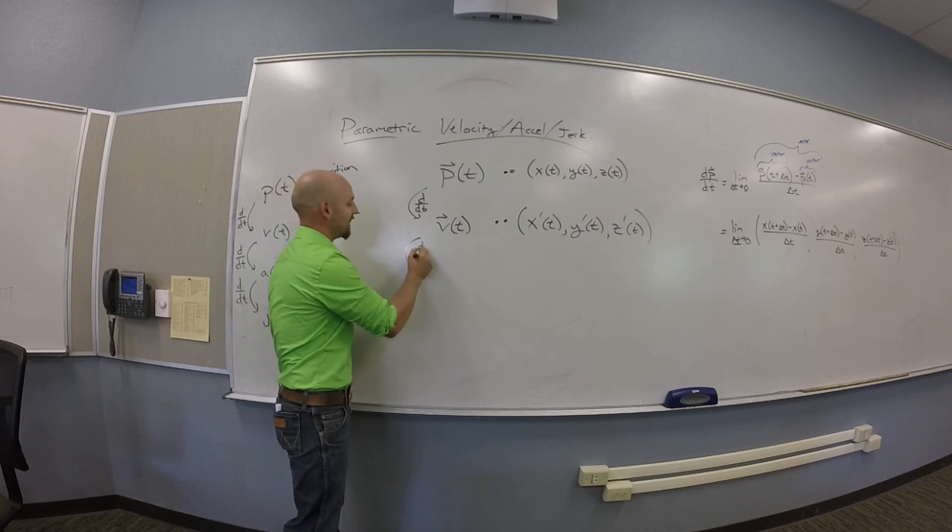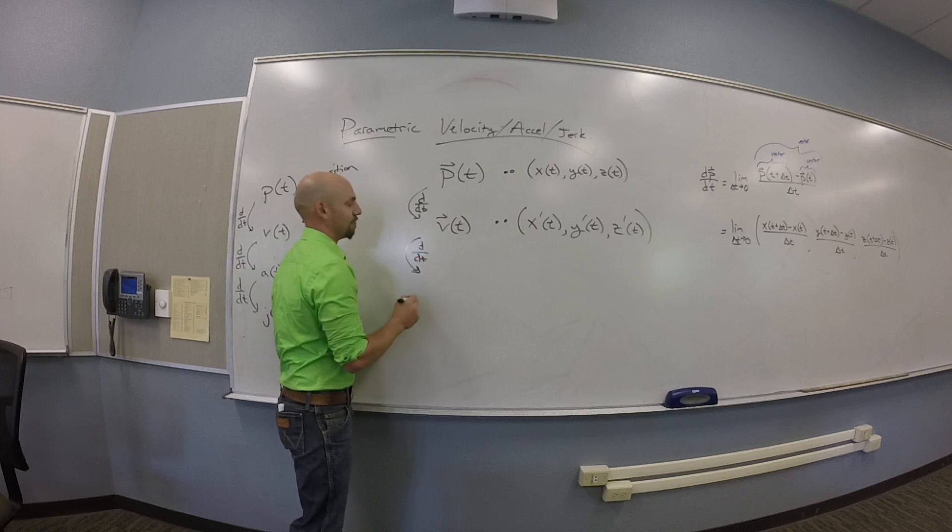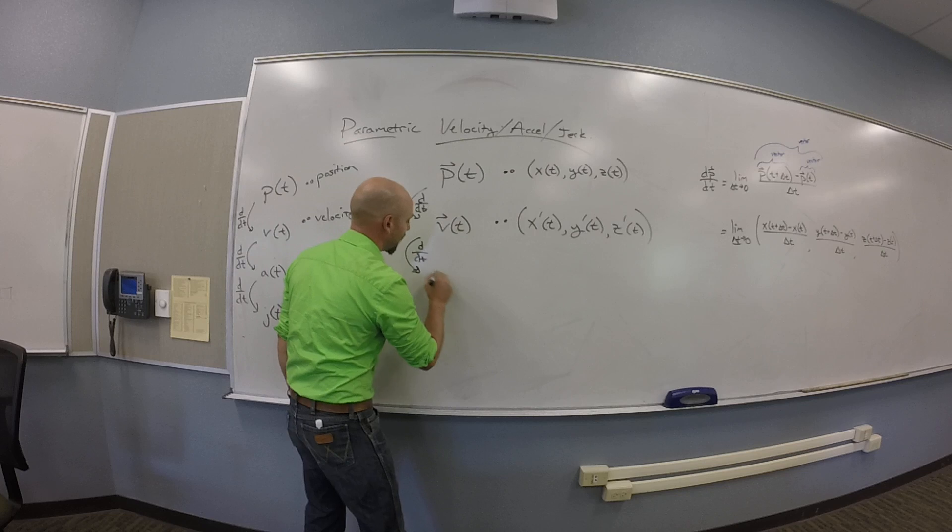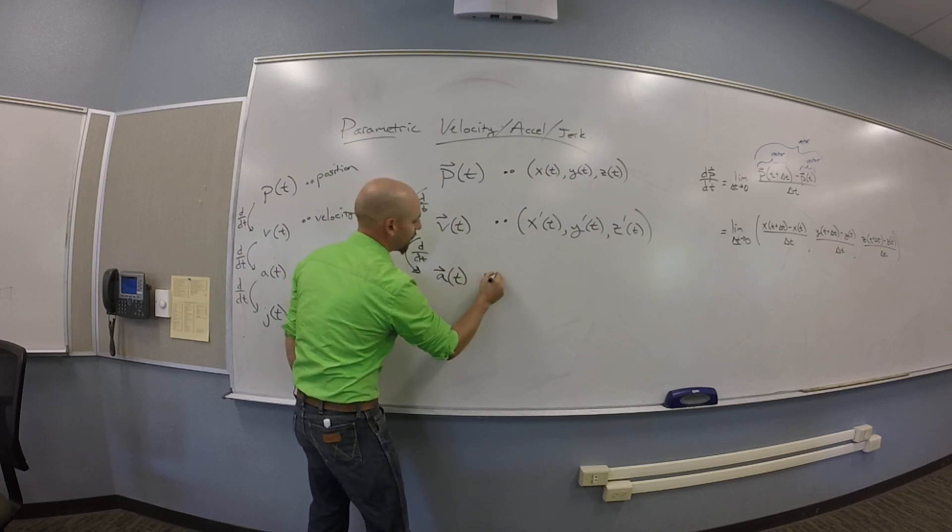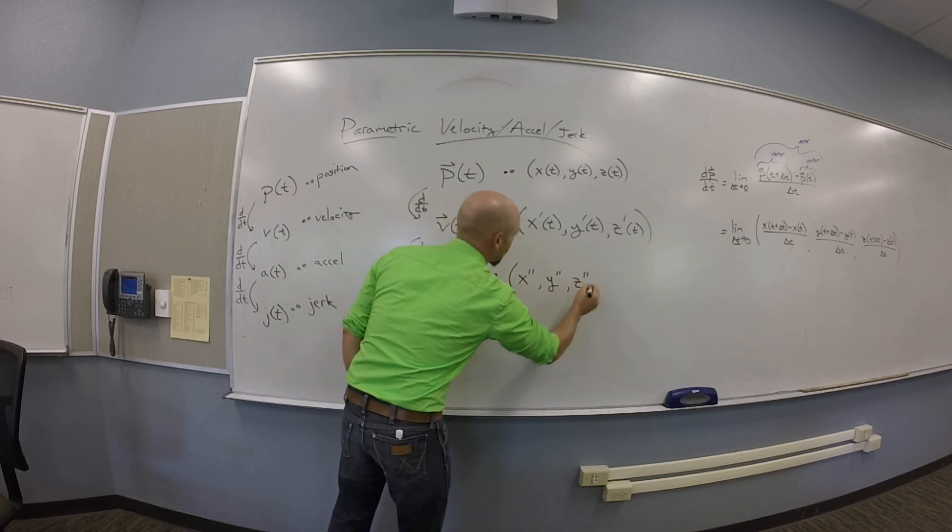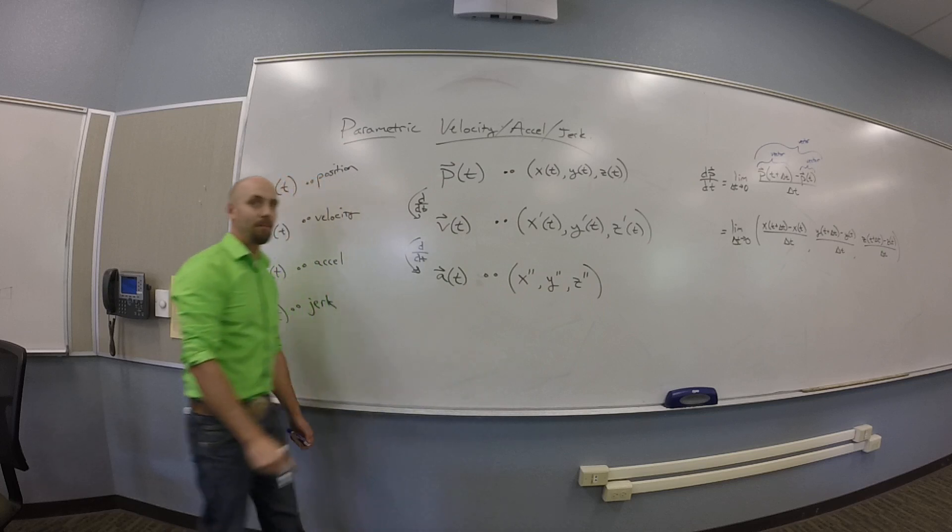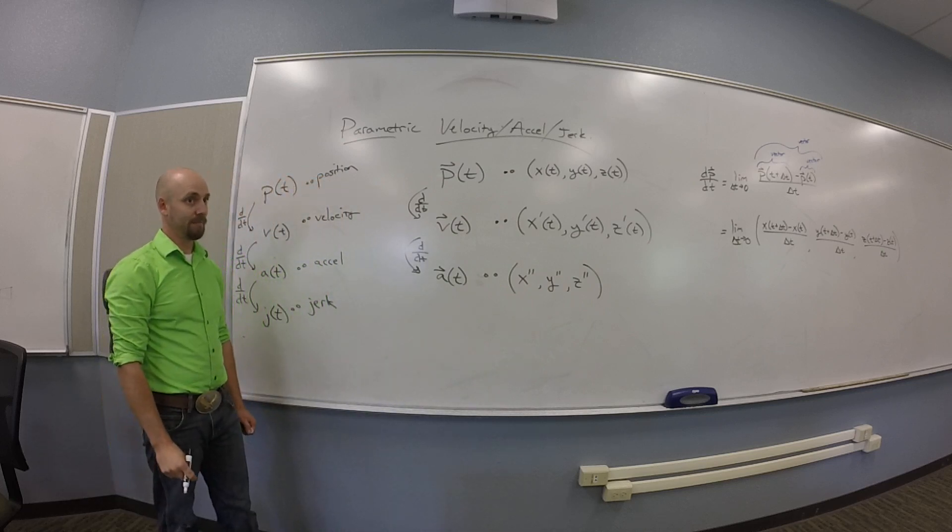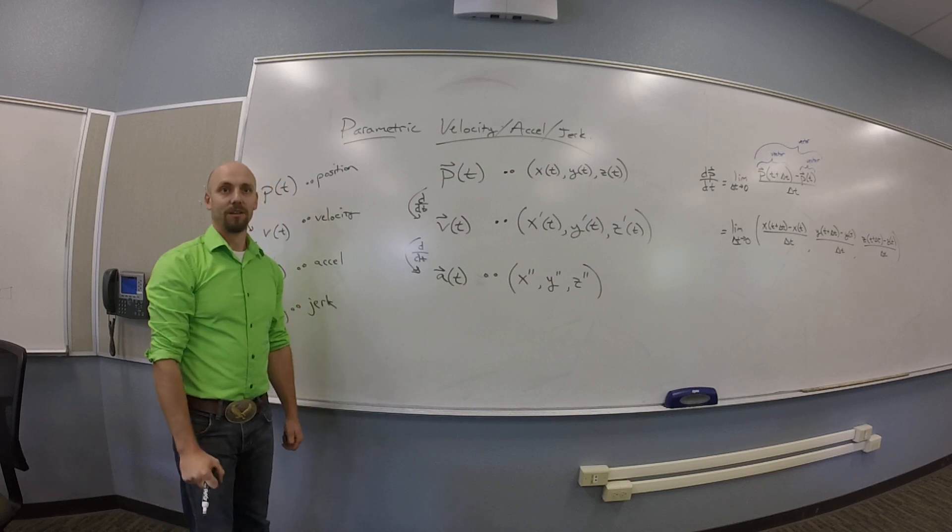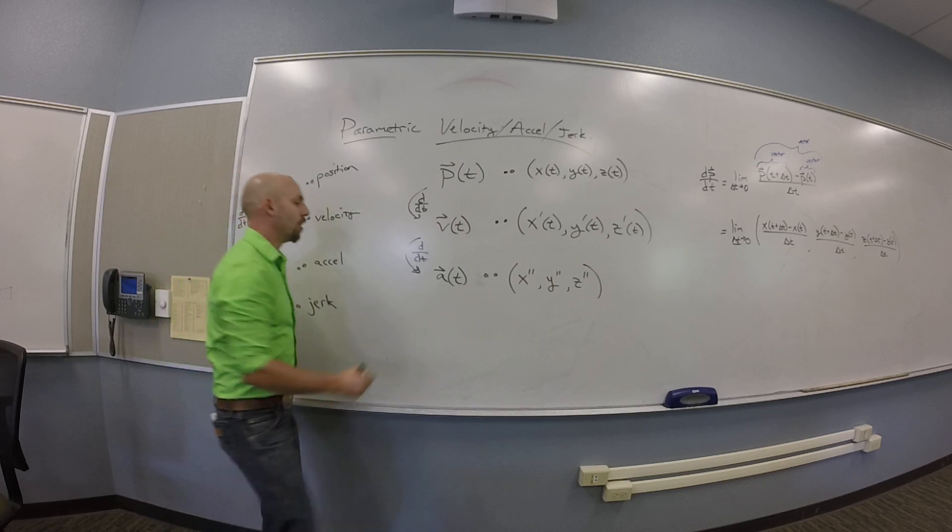If you do d dt again to this thing, what will you get? Double prime. You'll get an a of t, which is given by x double prime, y double prime, and z double prime. And then if you do this again, you get jerks and triple primes.